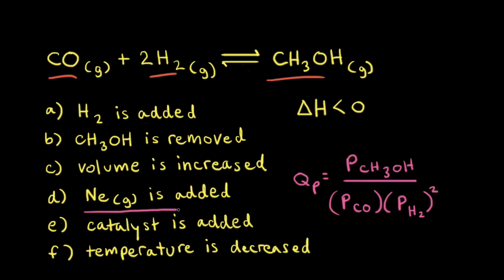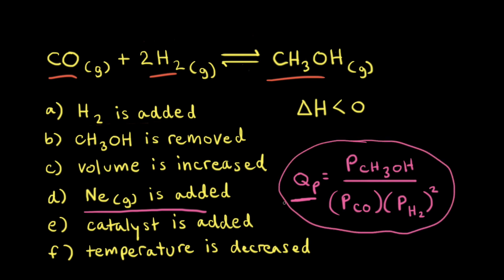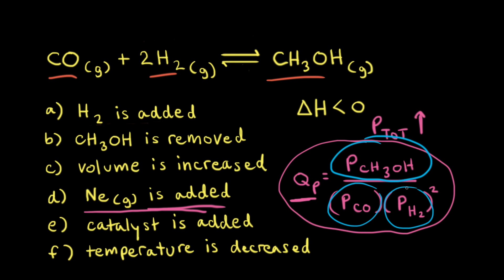Next, we try adding some neon gas to our reaction mixture at equilibrium. Neon gas is an inert gas, which means it doesn't react with any of our reactants or products. If we look at the expression for the reaction quotient QP, neon gas is not included. Therefore, adding neon gas is not going to change the value for QP, so the reaction remains at equilibrium — there's no shift when an inert gas is added. Adding neon gas does increase the total pressure, however the partial pressures for methanol, carbon monoxide, and hydrogen gas actually stay the same. Therefore, Q doesn't change.